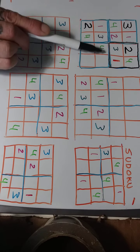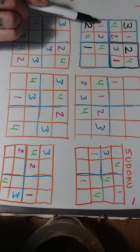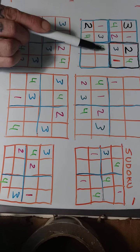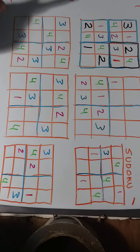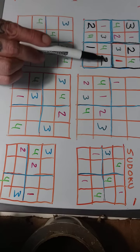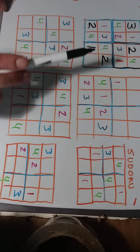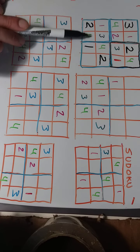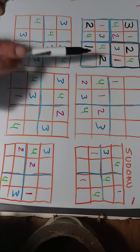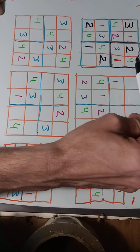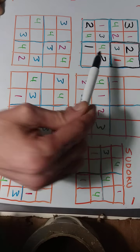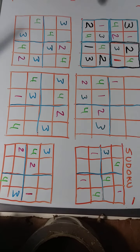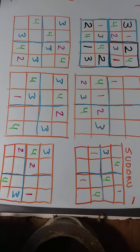Which number are we missing in this row? We need the numbers one, two, three, and four — we're missing a two. That leaves us with the bottom right square where we could fill in three, or looking at the bottom row we're missing a three, or with the last column on the right we're missing a three. That completes our first four by four sudoku puzzle.